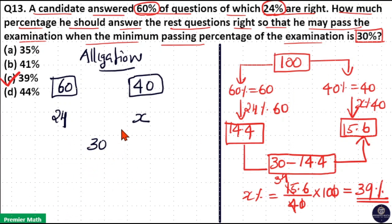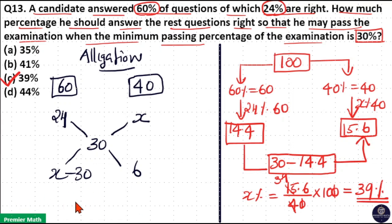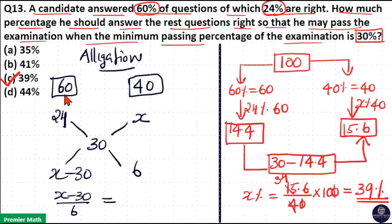Using the allegation method: the difference between 24 and 30 is 6, and the difference between x and 30 is x − 30. Taking the ratio of left-hand side to right-hand side: (x − 30) / 6 = 60 / 40, because the LHS corresponds to 60 and the RHS to 40.